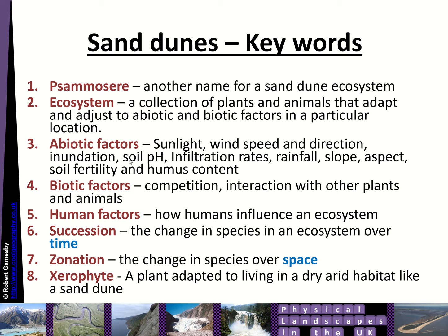Further abiotic factors include inundation from the sea, soil acidity or pH (parts of hydrogen), infiltration rates, rainfall, slope, aspect, the fertility of the soil, and how much humus content there is in it. Your biotic factors are things like competition with other species and interactions with other plants and animals.